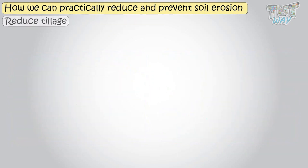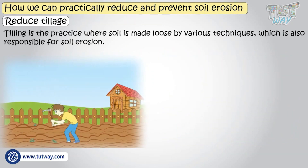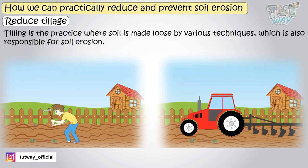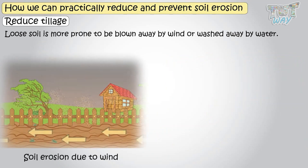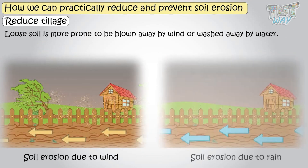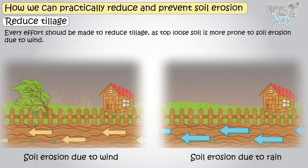It is reduced tillage. Tilling is a practice where soil is made loose by various techniques. That is also responsible for soil erosion, as loose soil is more prone to be blown away by the wind or washed away by water. Every effort should be made to reduce tillage, as top loose soil is more prone to soil erosion due to wind.